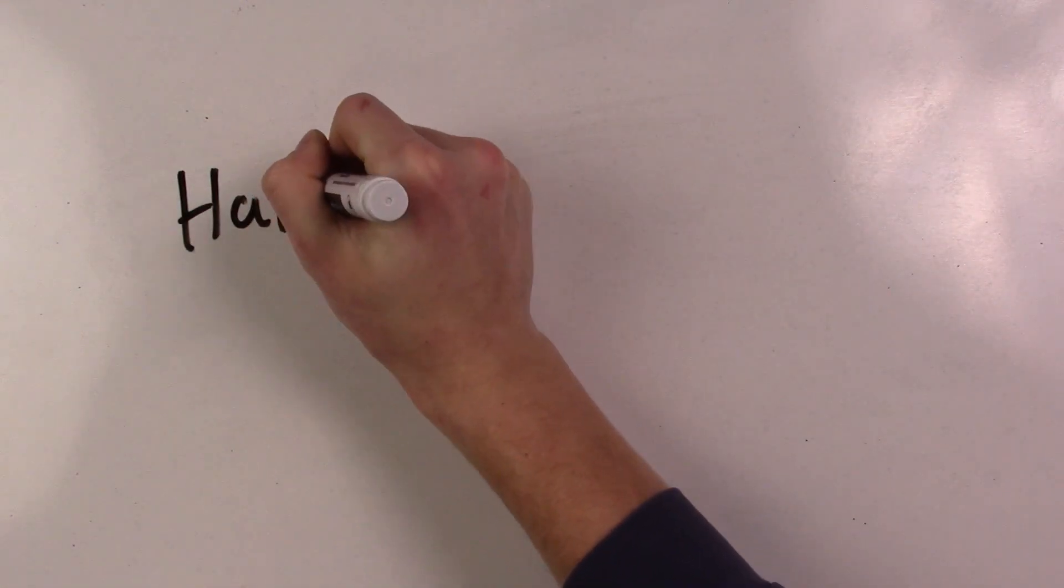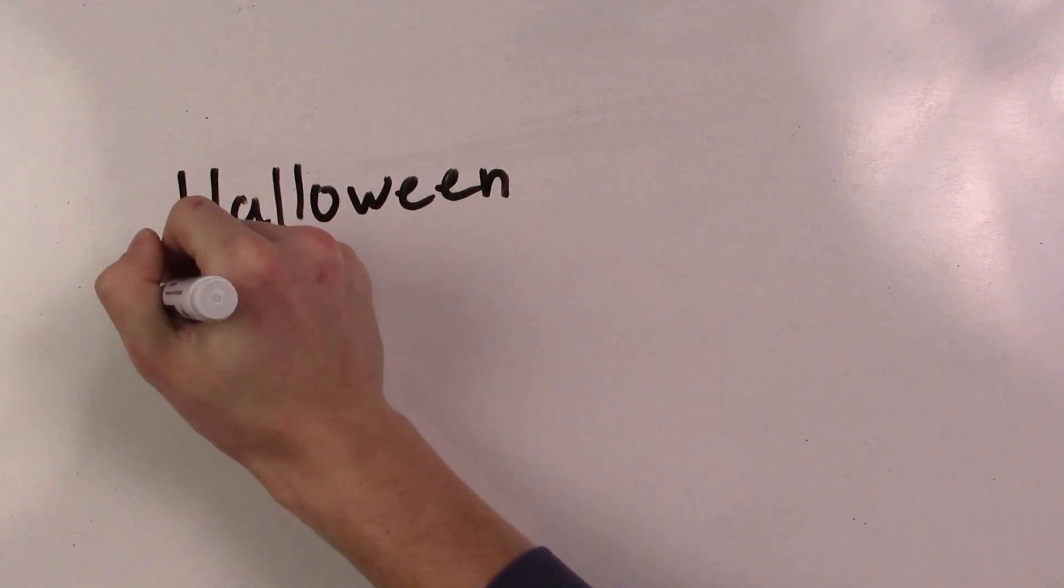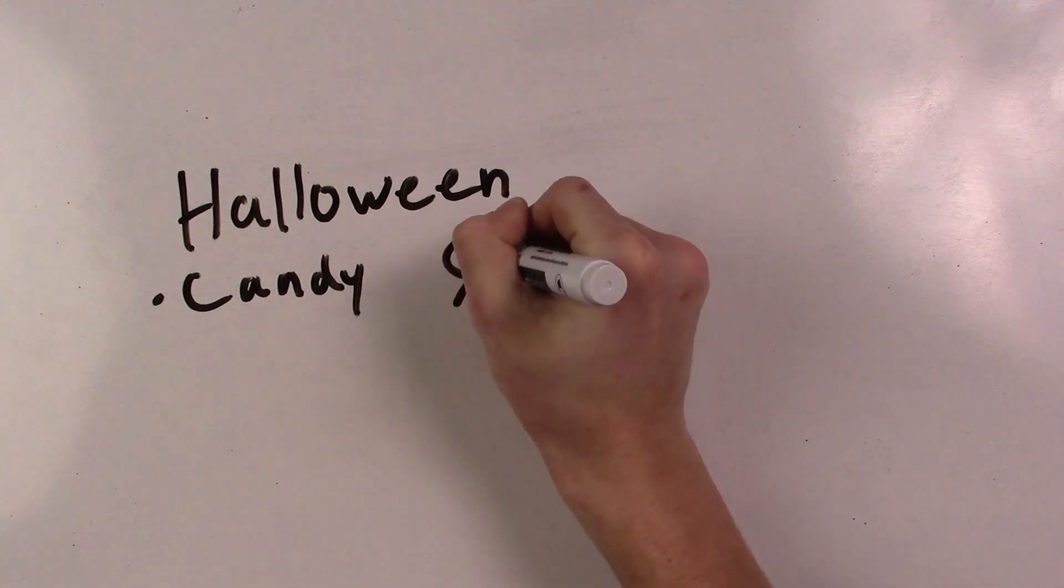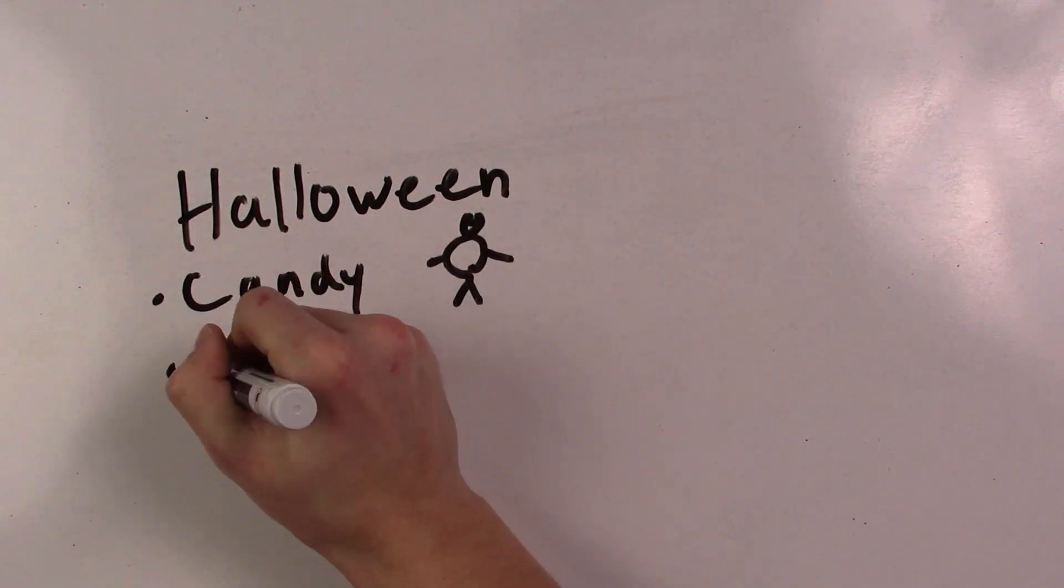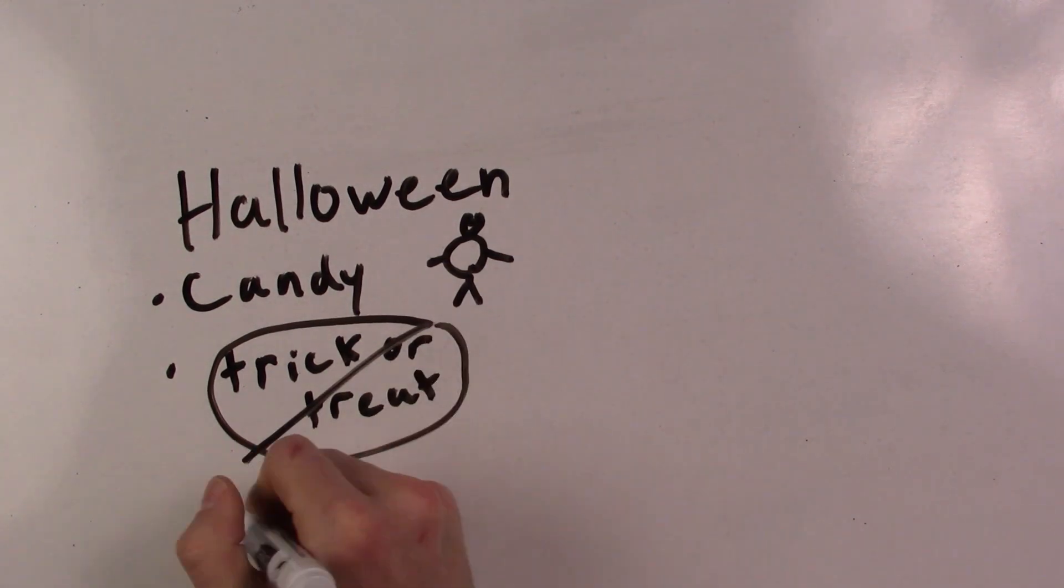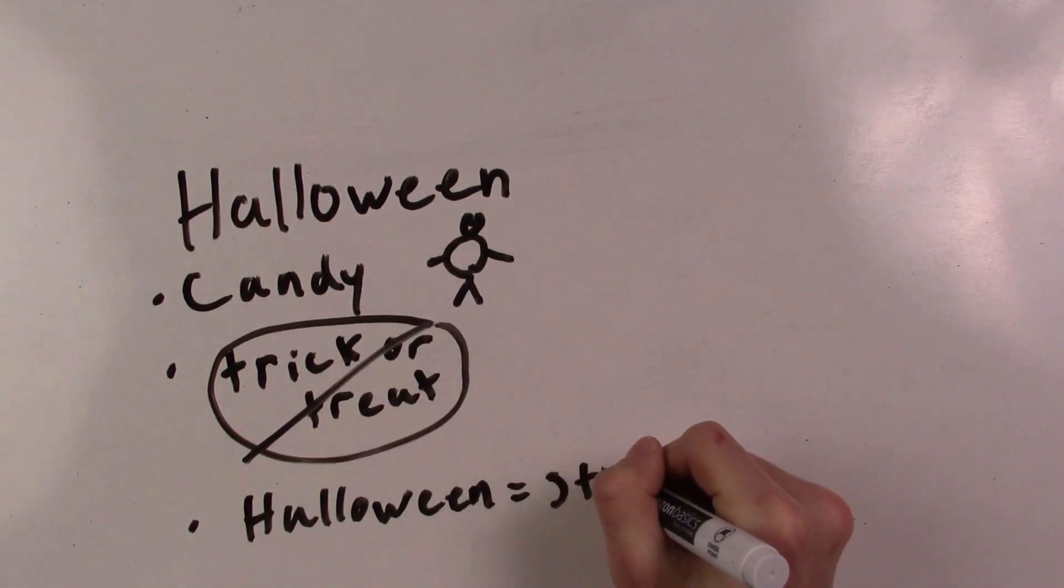At number 6 is Halloween, because the only good thing about Halloween is the candy and that makes you feel fat. Plus, when you get older, you don't get much candy because you don't go trick-or-treating, so it's really a stupid holiday.